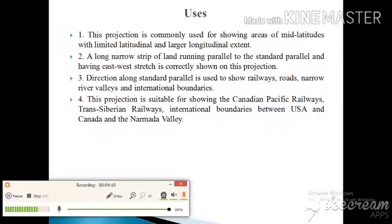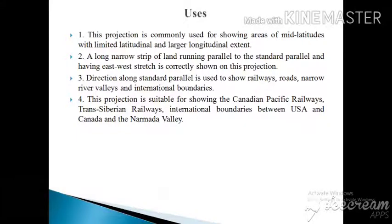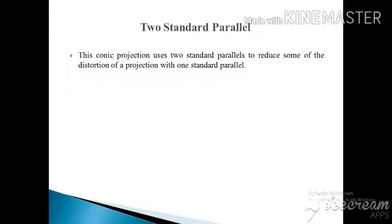This projection is commonly used for showing areas of mid latitudes with limited latitudinal and larger longitudinal extent. Second: along narrow strips of land running parallel to the standard parallel and having east-west width correctly shown on this projection. For that direction along standard parallel is used to show railways, roads, narrow river valleys, and international boundaries, for example Canadian Pacific Railways, Trans-Siberian Railways, international boundaries between USA and Canada, and the Narmada Valley.